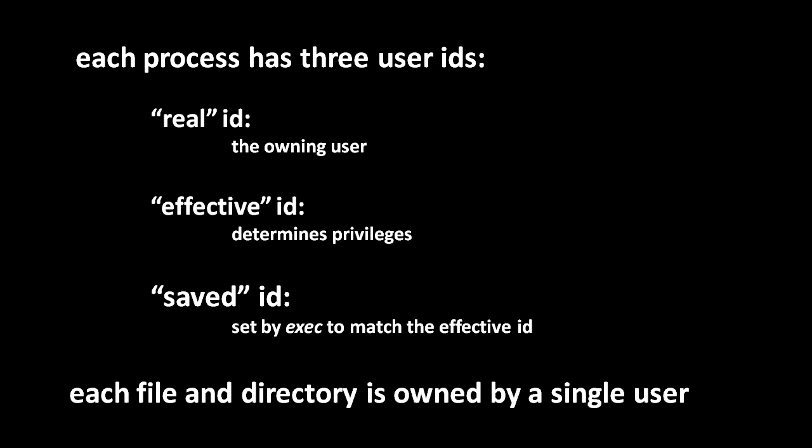Somewhat confusingly, associated with each process is not just one user ID but actually three different user IDs. The so-called real ID is the ID of the owner of the process, whereas the effective ID is the ID which actually determines what privileges this process has. And the saved ID is set by calls to exec to match the effective ID — so the saved ID effectively keeps a record of whatever the effective ID was at the time of the last exec call.